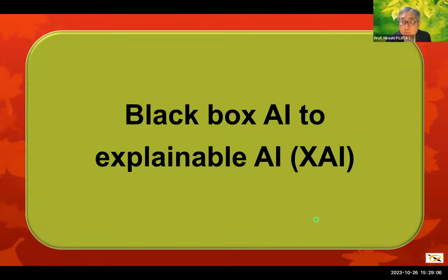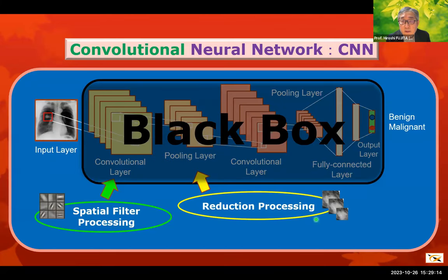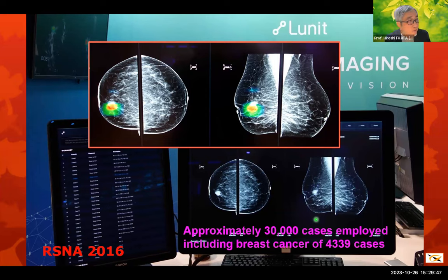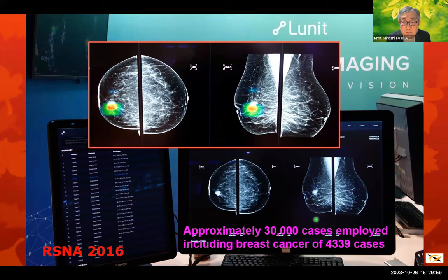There is a problem of the black box nature in medical AI — explainable AI is required. Since a major part of deep learning's structure is a black box, it is impossible to know how and why it reached a decision. One way to solve this problem is to use a heat map color representation technique, which indicates which part of the image has a problem — as shown in the case of mammography for breast cancer. However, this is still not enough as it does not explain why deep learning detected a particular location.